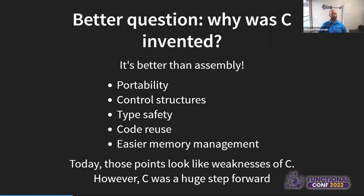Instead of having to write jumps and comparisons at the assembly level, C introduced control structures like for loops and while loops. C added type safety, which seems to contradict what I just said about C having weak types — but when you compare C to what came before it, the type safety is amazing. C allowed code reuse; it became much easier to define functions and libraries and use them across multiple projects. And as much as we beat on C for manual memory management, memory management in C is leaps and bounds better than anything that came before it.